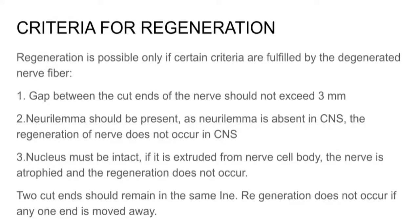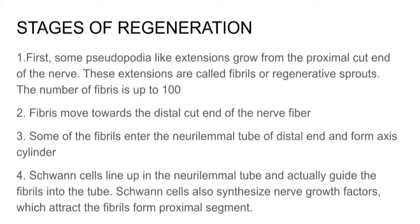Stages of regeneration: first, pseudopod-like extensions grow from the proximal end of the nerve. These extensions are called sprouts or regenerative sprouts. The number of fibers is about 100. The fibers move towards the distal cut end of the nerve fiber. Some of the fibers enter the neurilemma tube of the distal end, and Schwann cells line up in the neurilemma tube to guide the fibers into the tube.